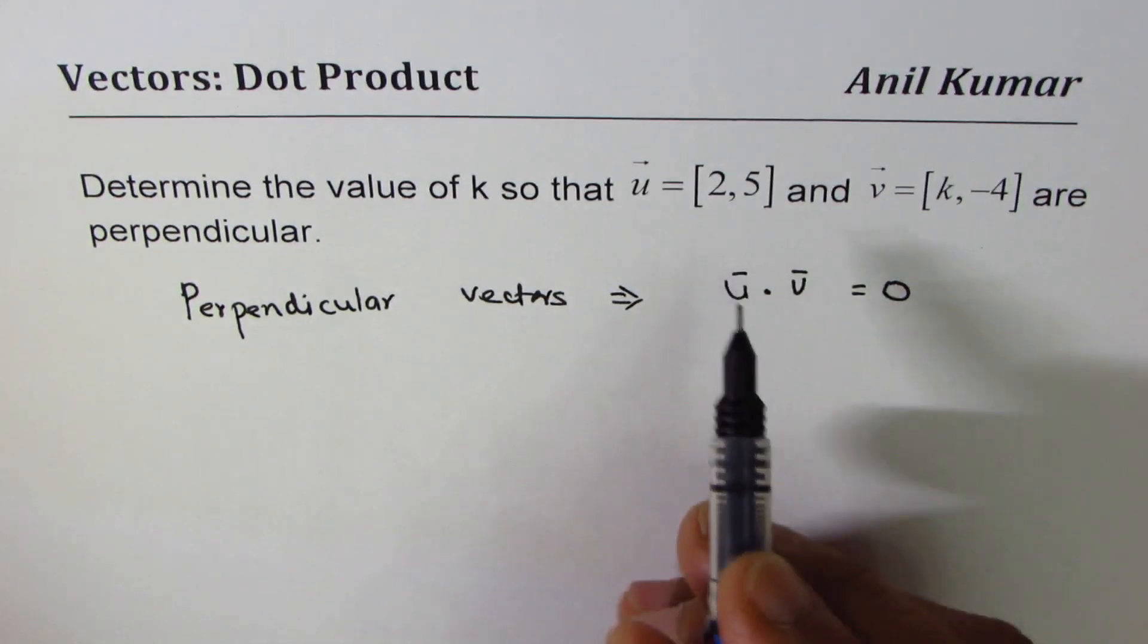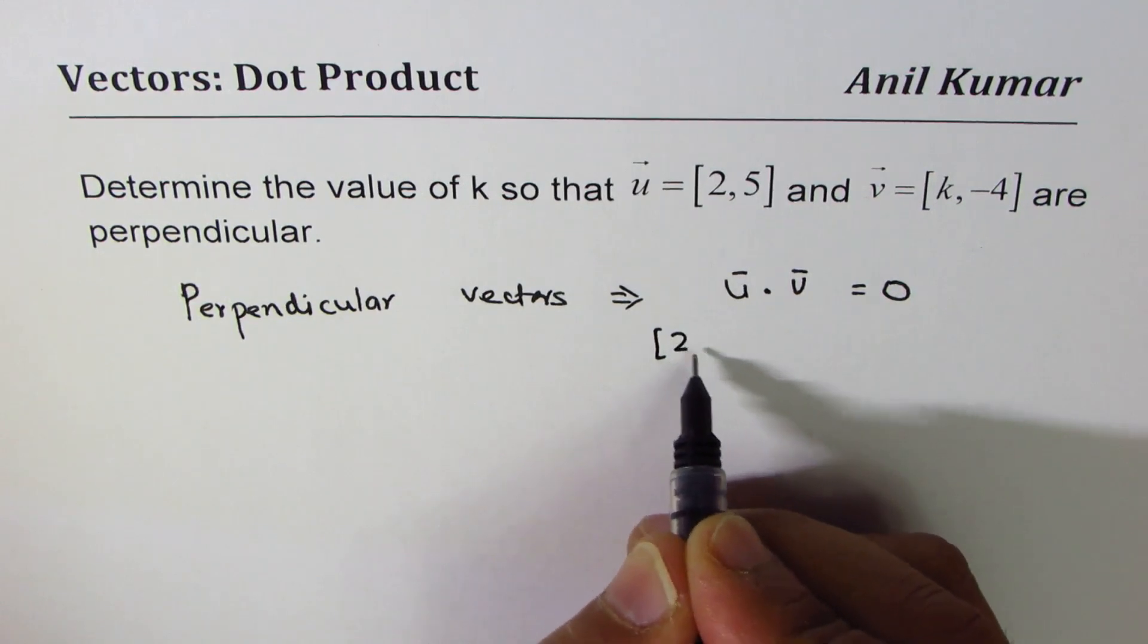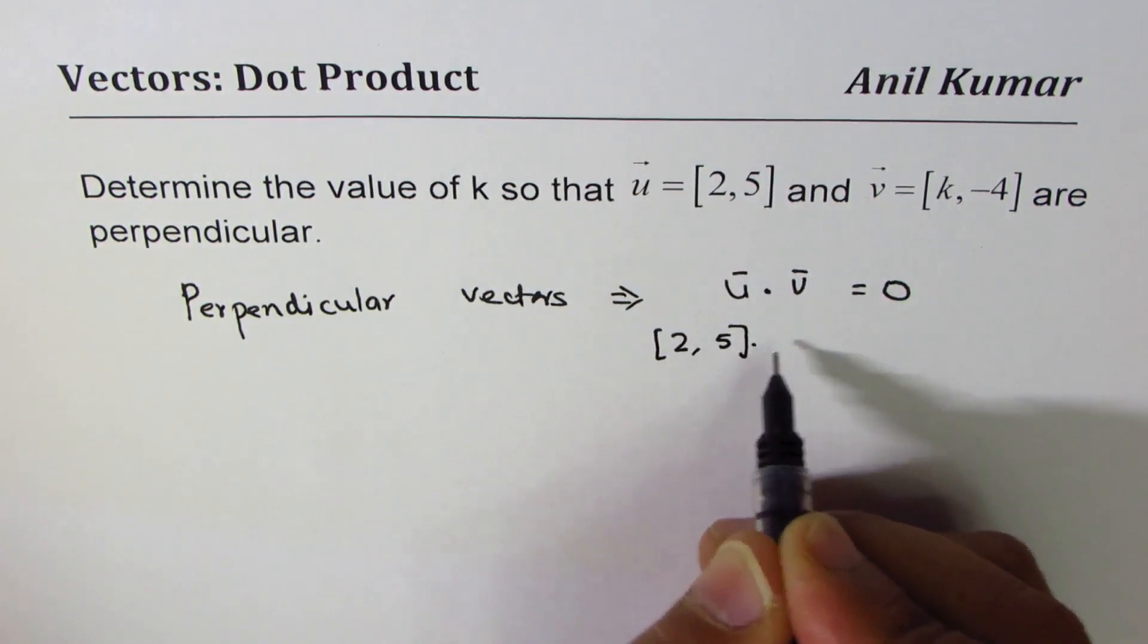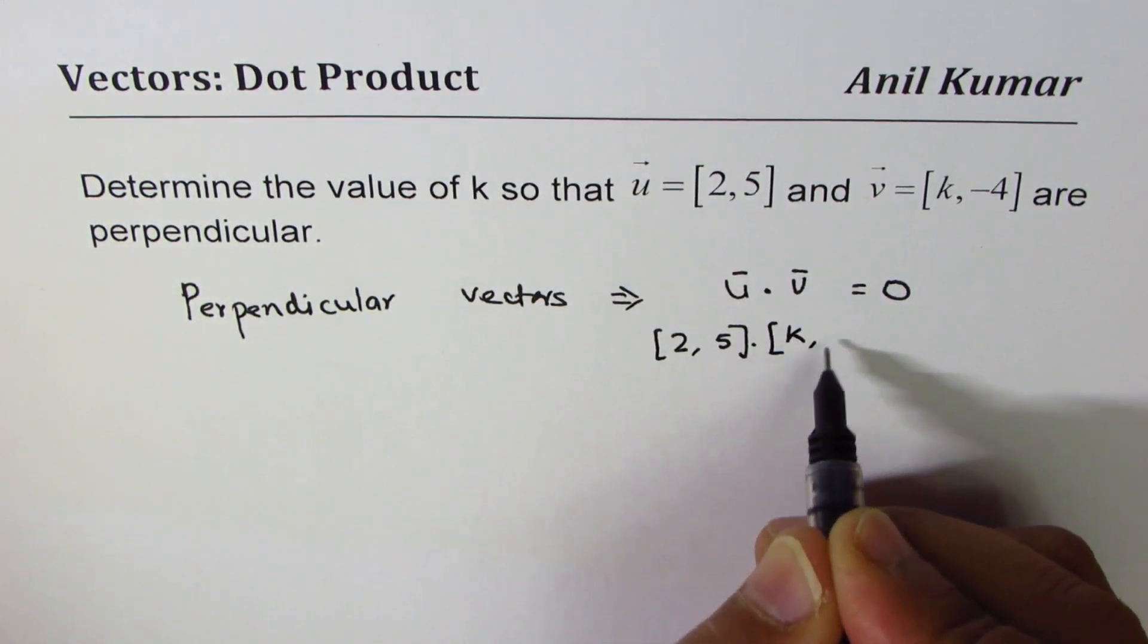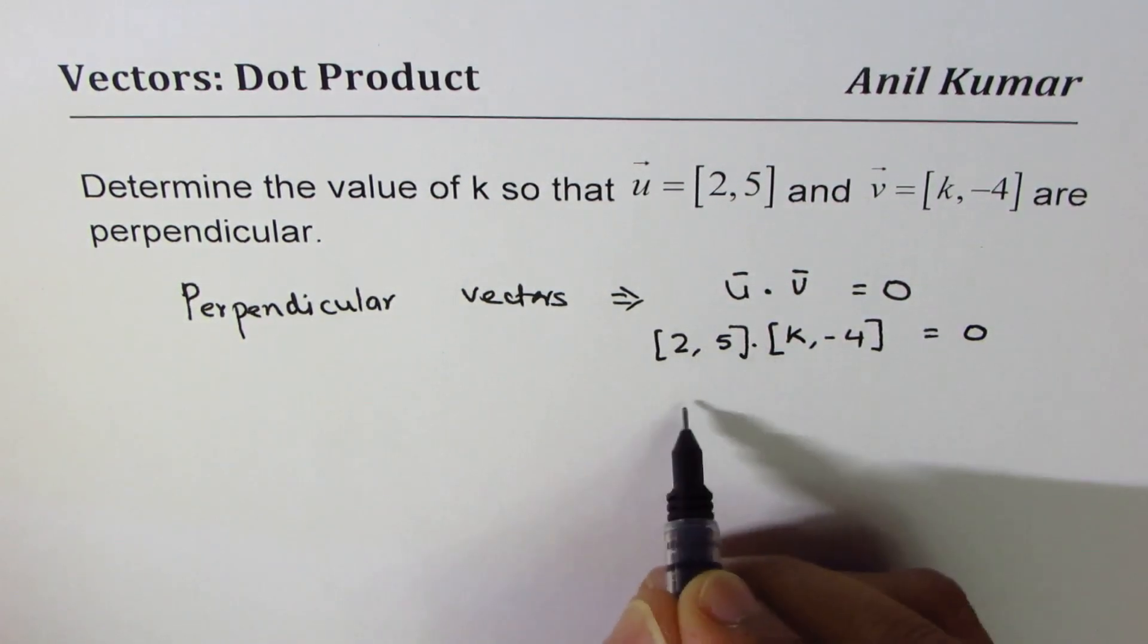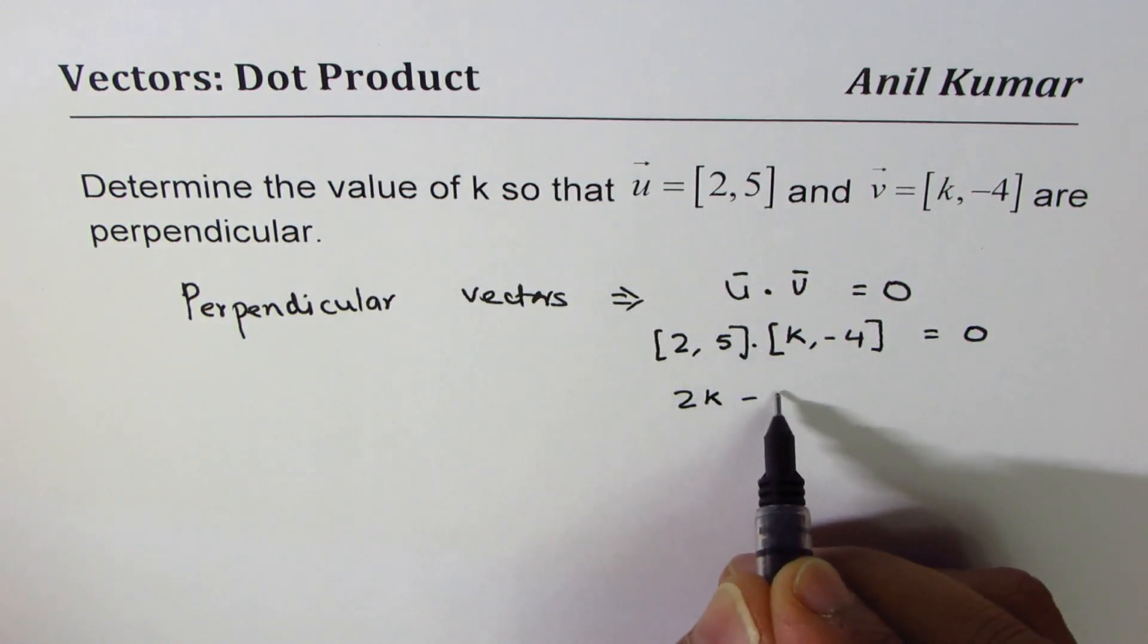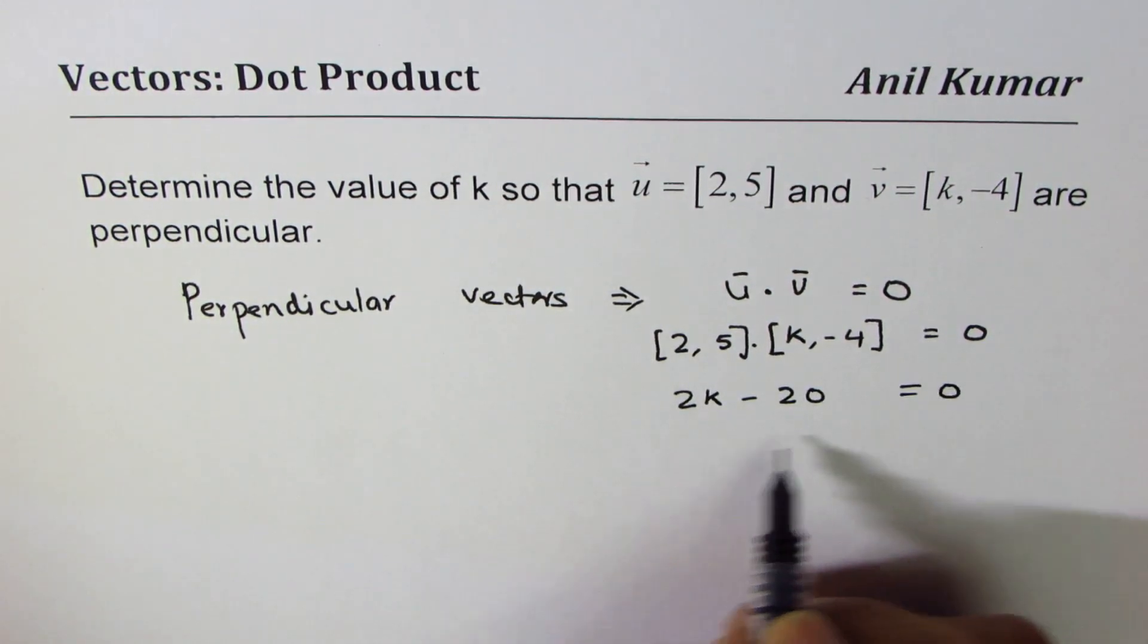Now let's try. So we have vector u as [2, 5] dot vector v is [k, -4], and we want this to be 0. That is 2k minus 4 times 5 is 20. That should be 0.